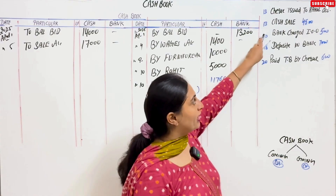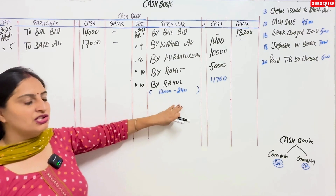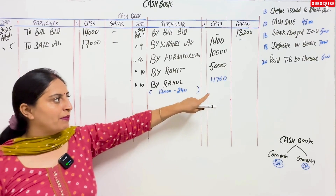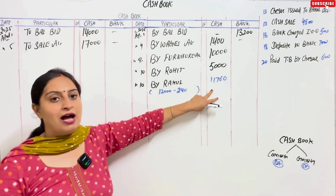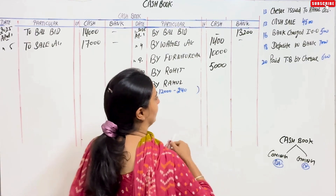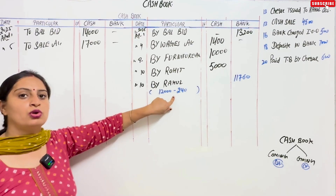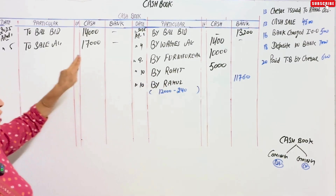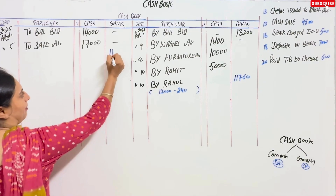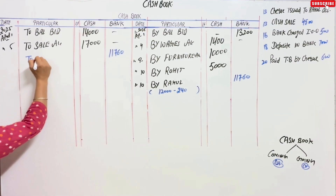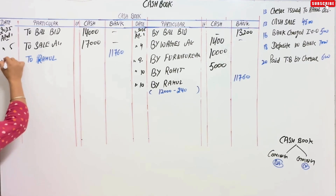April 13: the cheque issued to Rahul was dishonored. When a cheque is dishonored in the cash book, you reverse the entry to the opposite side. Rahul's cheque was on the credit side, so now you enter it on the debit side in the same bank column. The amount is ₹11,760, and you write 'To Rahul' on the debit side, dated April 13.